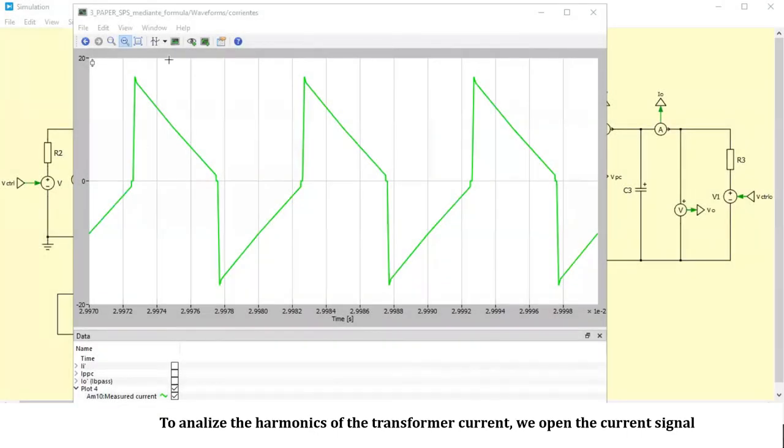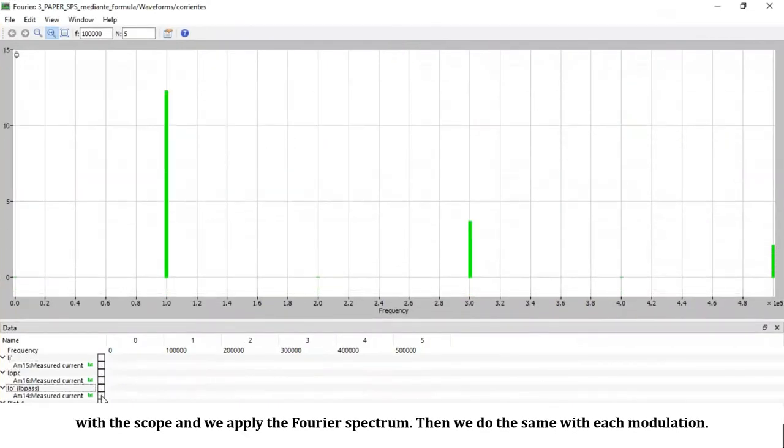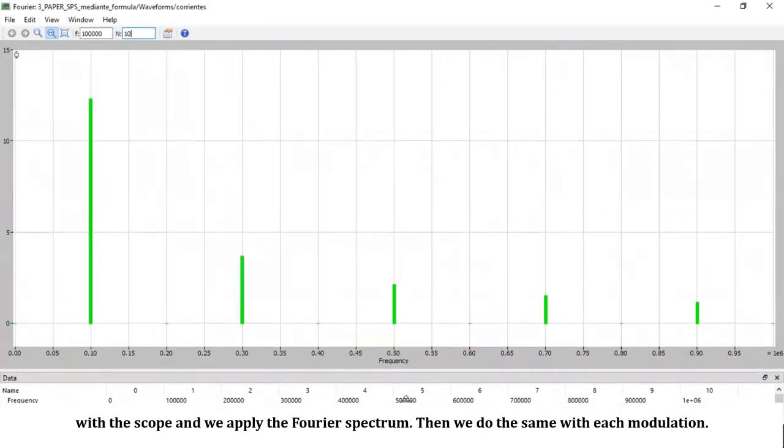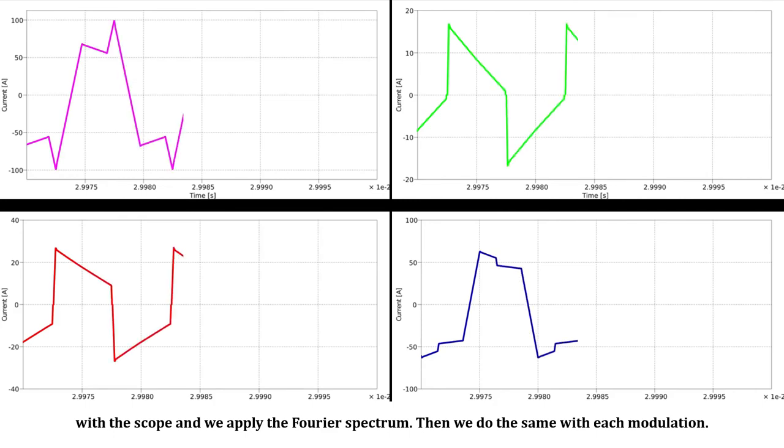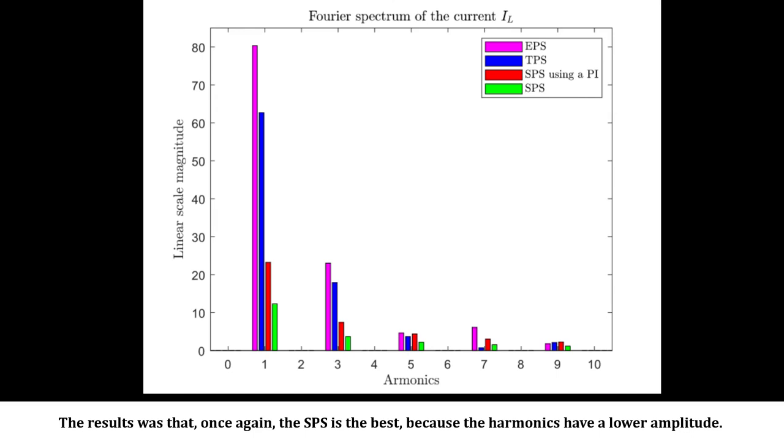To analyze the harmonics of the transformer current, we open the current signal with the scope and apply the Fourier spectrum. Then we do the same with each modulation. The results showed that, once again, the single phase shift is the best because the harmonics have a lower amplitude.